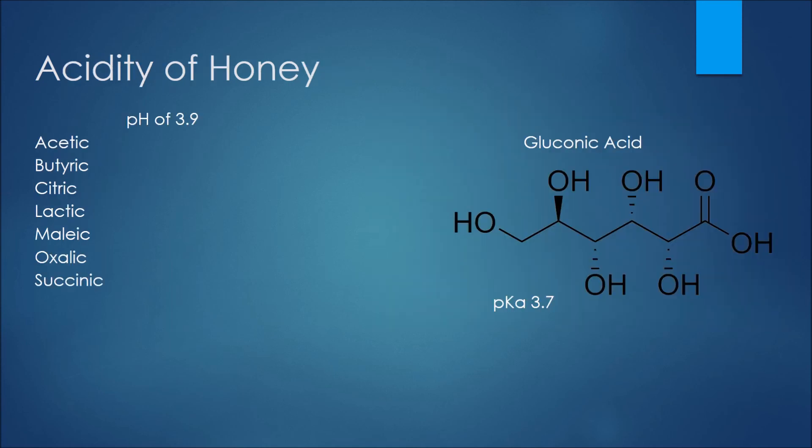Although honey does not taste acidic because of the high sugar content, the average pH of honey is about 3.9. It contains many different acids, including the ones shown here, with the most important being gluconic acid. With a pKa of 3.7, gluconic acid is the strongest of the acids found in honey, and the main reason honey has such a low pH. It is a carboxylic acid with six total OH groups.